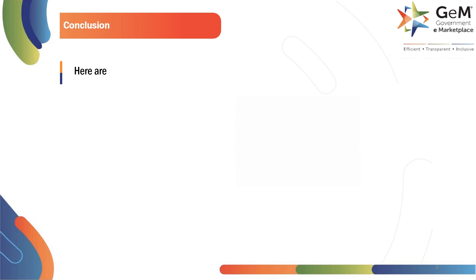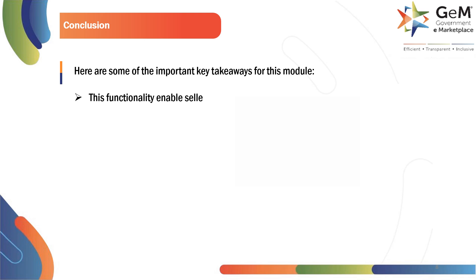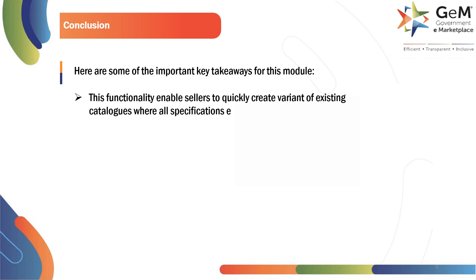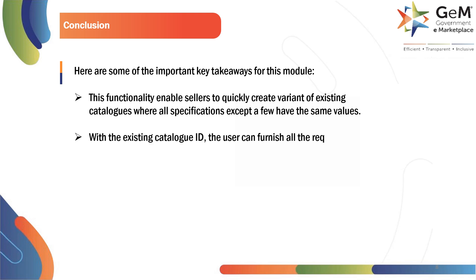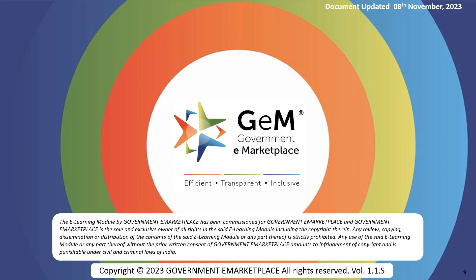Here are some of the important key takeaways of this module. This functionality enables sellers to quickly create a variant of existing catalogs where all specifications except a few have the same values. With the existing catalog ID, the user can furnish all the required details automatically. Thank you.